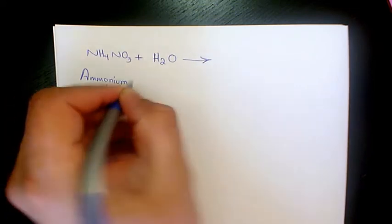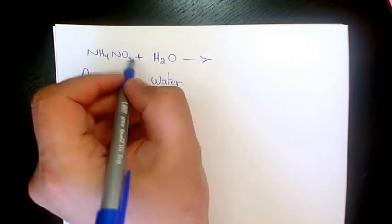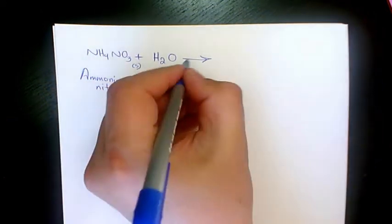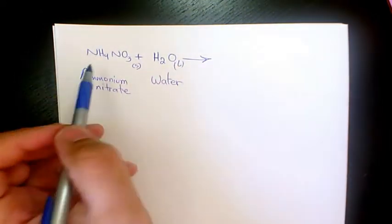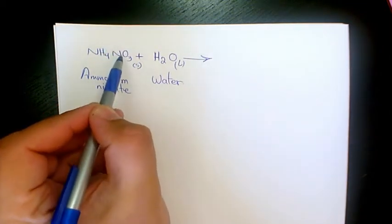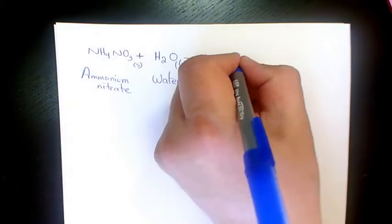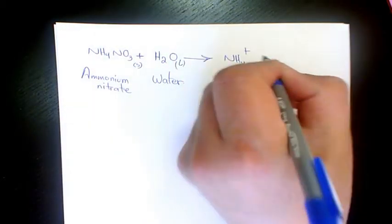H2O is water. NH4NO3 is solid and H2O is liquid. It contains the cation and anion NH4+ and NO3-. When it dissolves in water, it's going to produce NH4+ plus NO3- in aqueous solution.